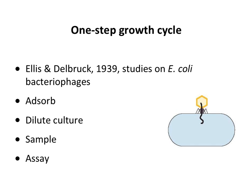They showed how to do a one-step growth curve or growth cycle on bacteriophages of E. coli. Max Delbrück was a physicist who came to biology and then to virology, because he could make it quantitative as he was used to in studying physics. So he developed this one-step growth cycle.